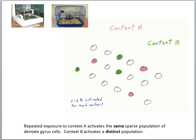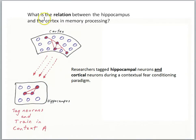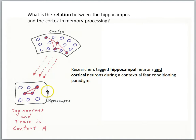In this study, we're going to ask the question: what's the relationship between the hippocampus and the cortex in memory processing? Here we have a model of the hippocampus and a bit of cortical tissue — brain cells in the hippocampus and brain cells up in the cortex.